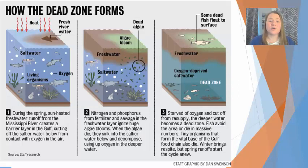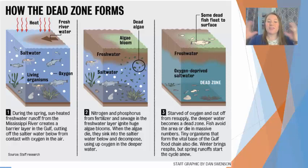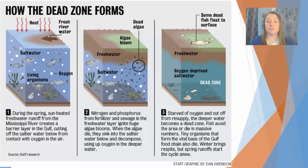A dead zone forms when you have fresh, nutrient-rich water coming out from, say, a river over the top of the ocean. This fresh water is less dense than the salt water, so it creates a barrier over the top of the salt water. That salt water is no longer able to exchange oxygen with the atmosphere, and the organisms in there use up all of that oxygen relatively quickly. There's also a lot of decomposition of that nutrient pollution, which depletes the remaining dissolved oxygen. As a result, nothing is able to survive, because even fish breathe that oxygen through their gills.